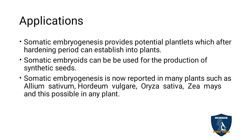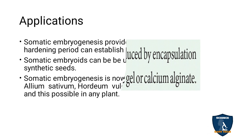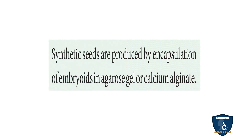Somatic embryogenesis is now reported in many plants, such as Allium sativum (garlic), Hordeum vulgare (barley), Oryza sativa (rice), Zea mays (maize), and other plants. Synthetic seeds are produced by the encapsulation of embryos in an agarose gel or calcium alginate. The encapsulated embryos are called synthetic seeds. This may be asked in your one-mark as well as NEET exam.